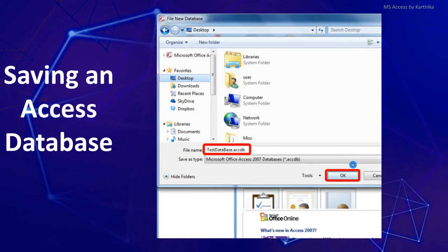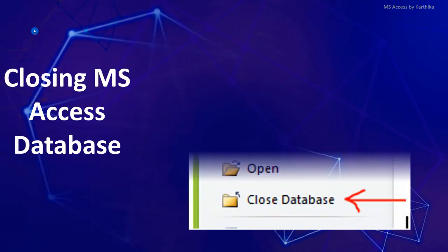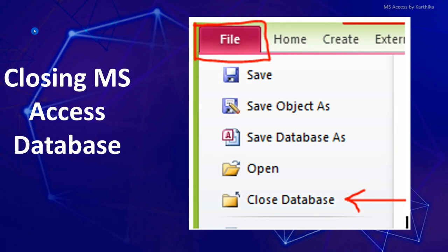To close the database, go to File and select Close Database. To exit MS Access entirely, click File then Exit, or use the Close button in the title bar. The shortcut keys are: Ctrl+S for Save, Ctrl+O for Open, F2 for Rename, and Alt+F4 to Quit — these are the same across other MS Office software packages. Hope you understood all these things; see you in the next video. Happy learning!